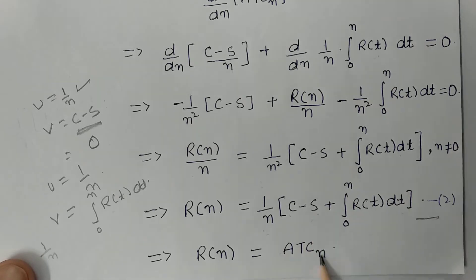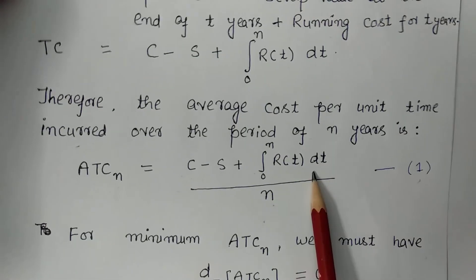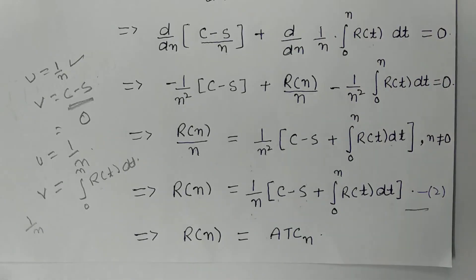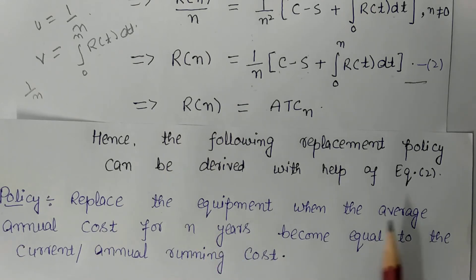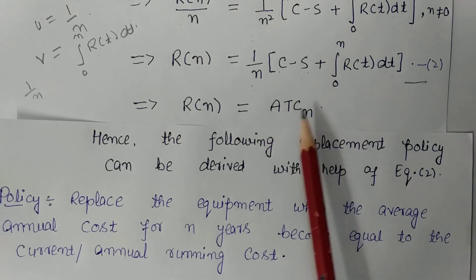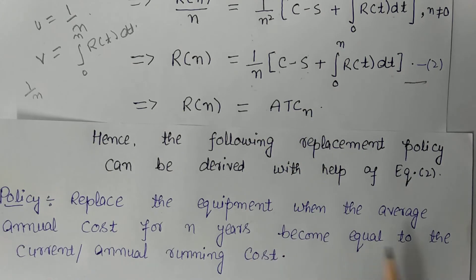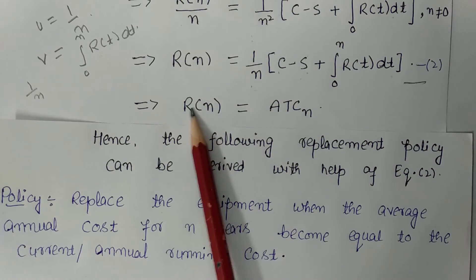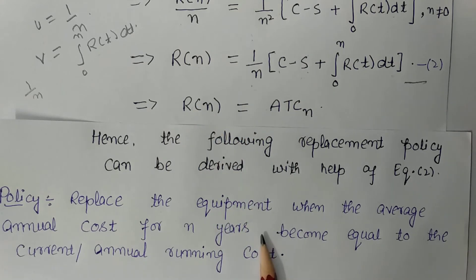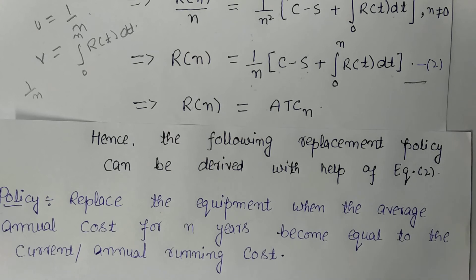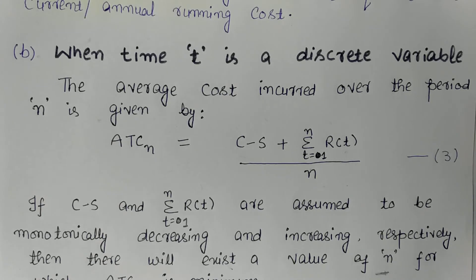From equation 2, we see this equals the average total cost for N years from equation 1. So the replacement policy is: replace the equipment when the average annual cost for N years becomes equal to the current running cost R(N). This is the replacement policy when time T is treated as a continuous variable.